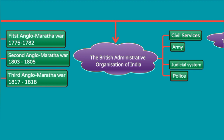Regarding the British Indian administration, there were four principal institutions: civil service, army, police, and the judicial system. These four institutions — civil service, army, judicial system, and police — formed the backbone of British administrative organization in India.